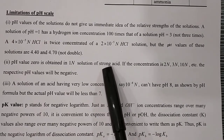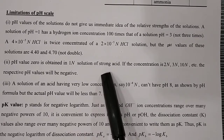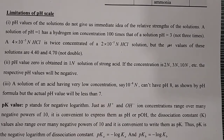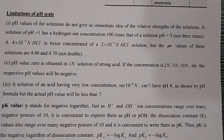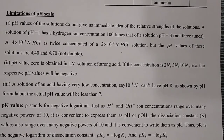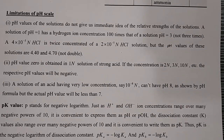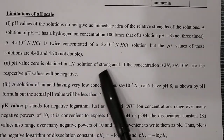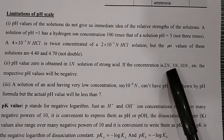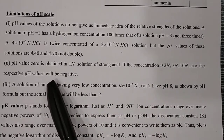Second limitation: pH value of 0 is obtained in a 1 normal solution of strong acid. If the concentration is 2, 3, or 10 normal, the respective pH values will be negative. pH can theoretically be negative or greater than 14 — both cases are possible theoretically. However, practically, instruments cannot measure below zero, so you cannot measure negative pH by instrumentation.